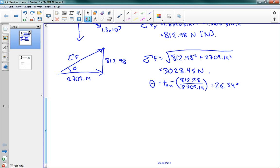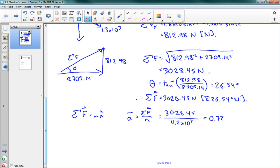So then we can say that the net force is equal to 3028.45 newtons east, 26.54 degrees north. We're not quite done yet because we need to find the acceleration. So F equals MA. A is equal to the net force over M. We have our numbers here, 3028.45 divided by the mass, 4.2 times 10 to the 3 kilograms. And this gives us 0.72 meters per second squared. And we have our direction from above, east, 27 degrees north. There's our final answer.